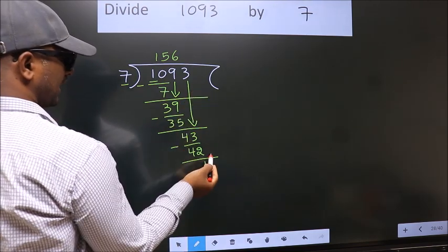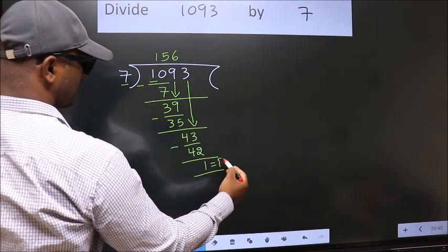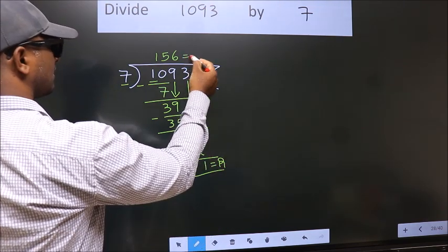No more numbers to bring it down. So we stop here. This is our remainder. This is our quotient.